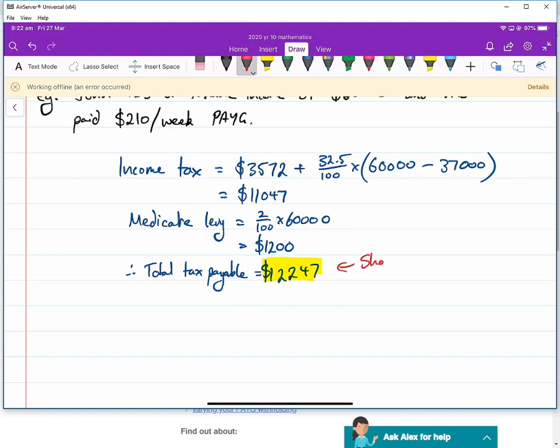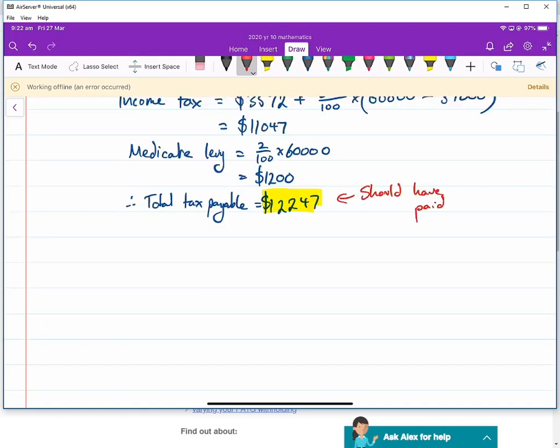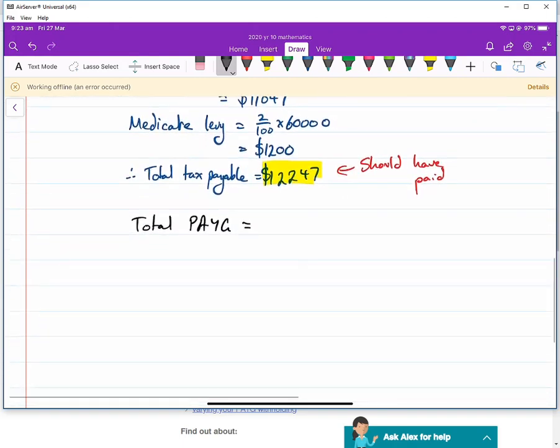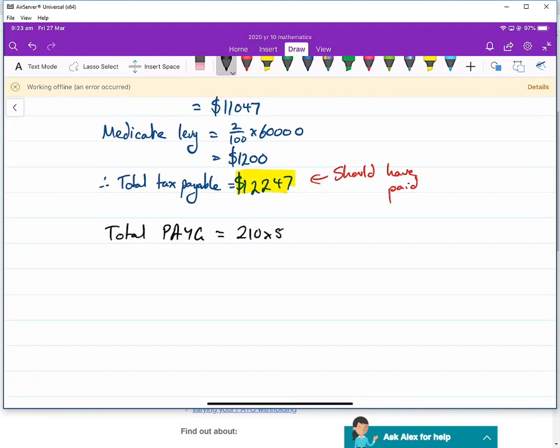Now, did he actually pay that much? That's what we want to check and see. He should have paid this through the financial year. So what we then do is we check what he actually did pay. So his total PAYG was $210 a week. So it was $210 times 52, which was $10,920. So this is what he has paid.